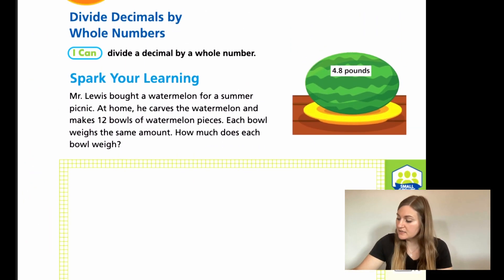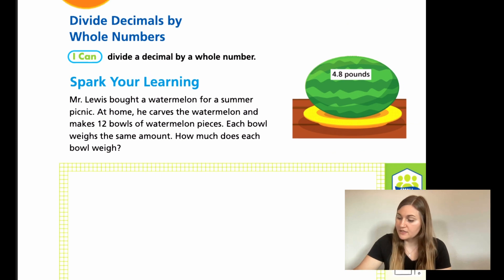So moving into the lesson on page 433, it says Mr. Lewis bought a watermelon for a summer picnic. At home, he carves the watermelon and places 12 bowls of watermelon pieces. Each bowl weighs the same amount. How much does each bowl weigh?